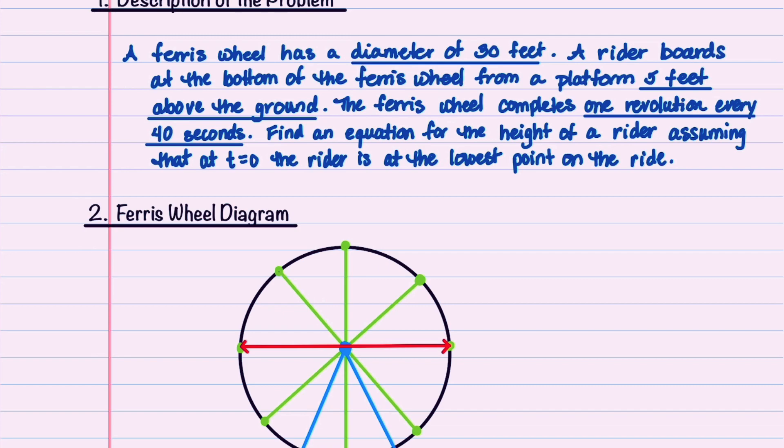We're asked to find an equation for the height of a rider, assuming that at t equals zero, the rider is at the lowest point on the ride.